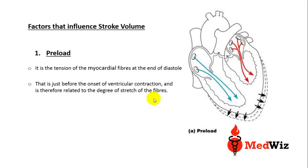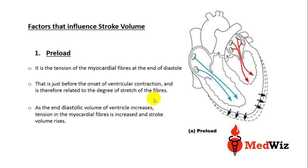Preload occurs just before the onset of ventricular contraction, at the end of diastole, and is therefore related to the degree of stretch of the fibers. To understand the relationship between preload and stroke volume: as the end diastolic volume of the ventricle increases, the tension in the myocardial fibers increases as well, and therefore the stroke volume increases.